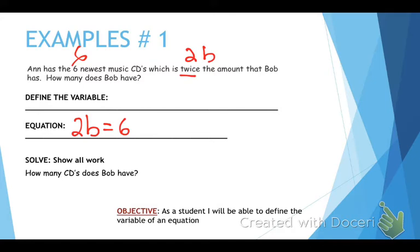Do we know how many Bob has? No, we don't. So Bob's amount is what is actually the unknown. And because that's the unknown, we're going to use that as the variable. So Anna has the six newest music CDs, which is twice the amount that Bob has. So in order to create an equation from that, what you would do is you would say twice the amount that Bob has is equal to six.